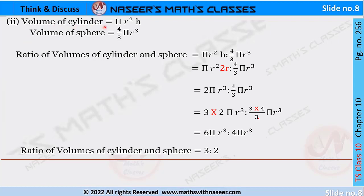The volume of the cylinder is πr²h, and the volume of the sphere is (4/3)πr³. The ratio of the volume of the cylinder to the sphere is πr²h : (4/3)πr³.